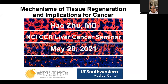Hal obtained his bachelor's degree from Duke and MD from the combined Harvard-MIT program of the HSC. I also graduated from that program, probably more than 20 years ago, so my age is really showing compared to Hal. He did his internal medicine at San Francisco, medical oncology at Dana Farber, and postdoctoral research at Boston Children's Hospital, then moved to UT Southwestern.